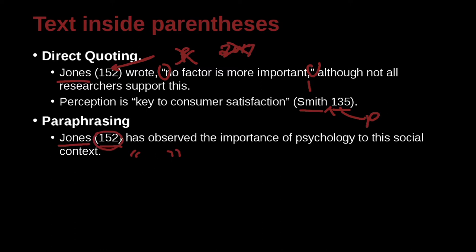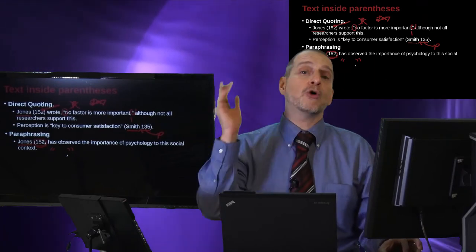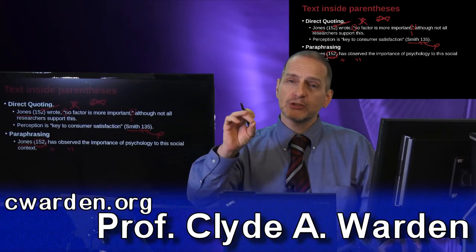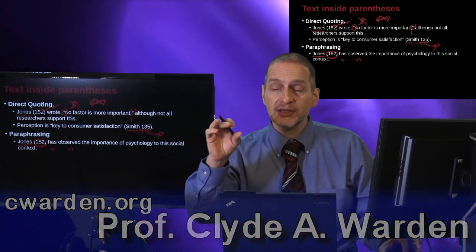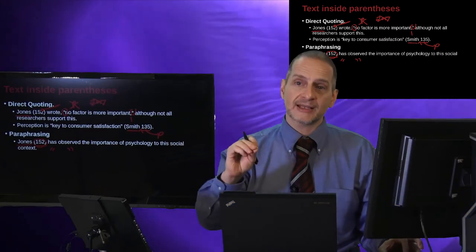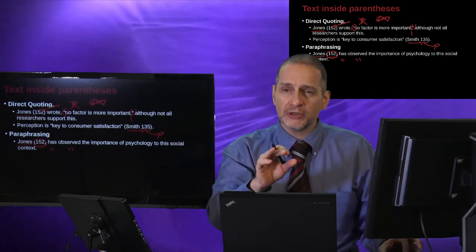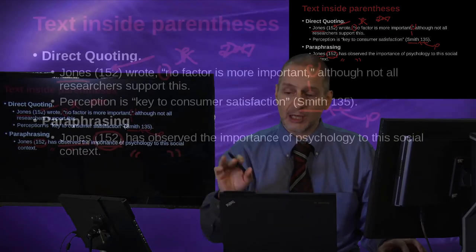Not a quote, but you still need the page number to indicate where inside the paper that idea comes from. This is quite different from the APA approach, which usually cites the whole paper as one idea. In the MLA approach, you need to cite the specific page or pages. Even if you're giving a general idea, you still need to locate about where inside that paper or source it's coming from.